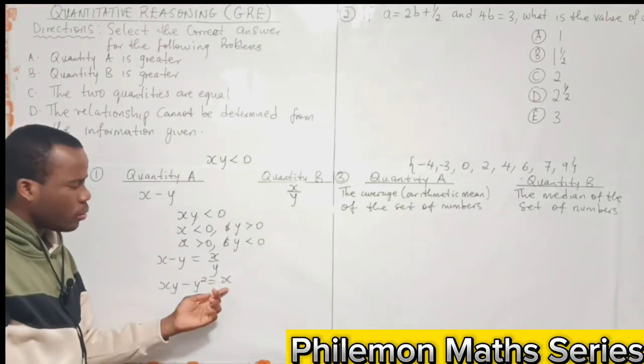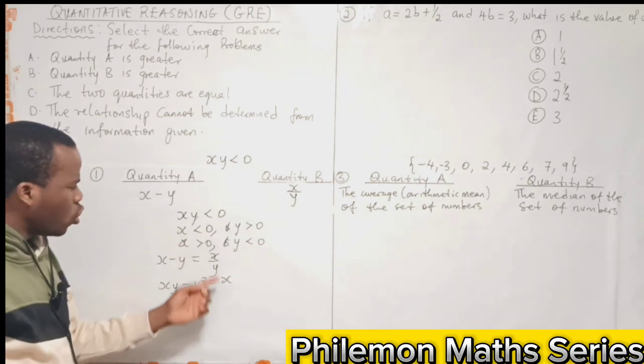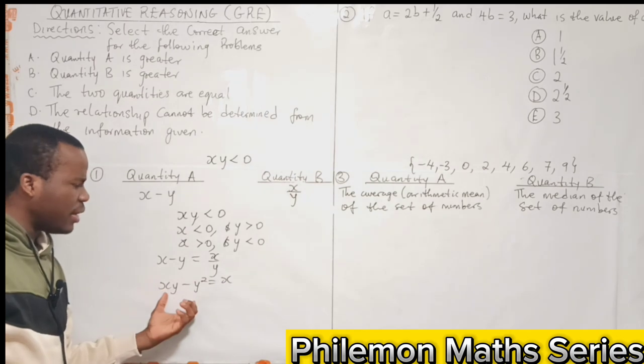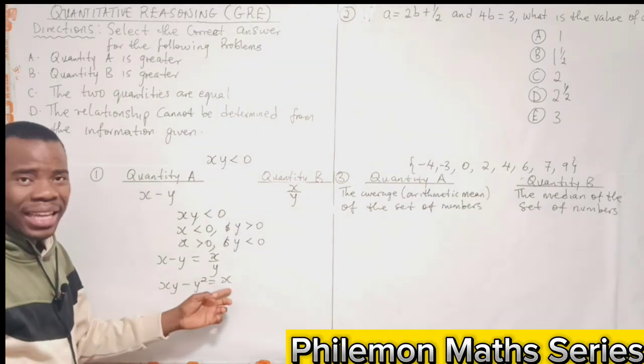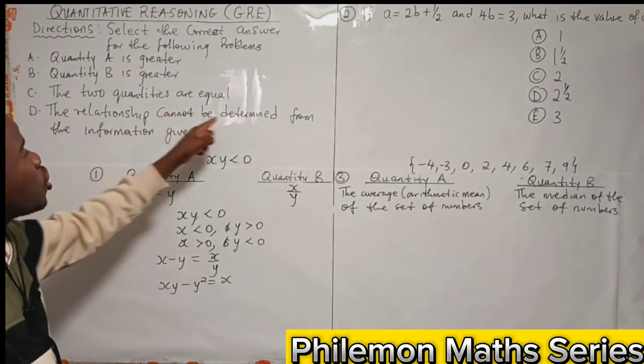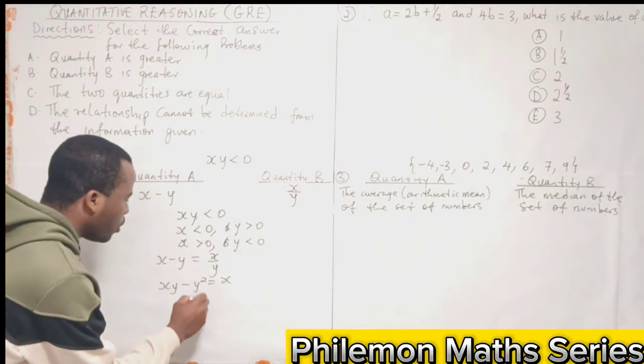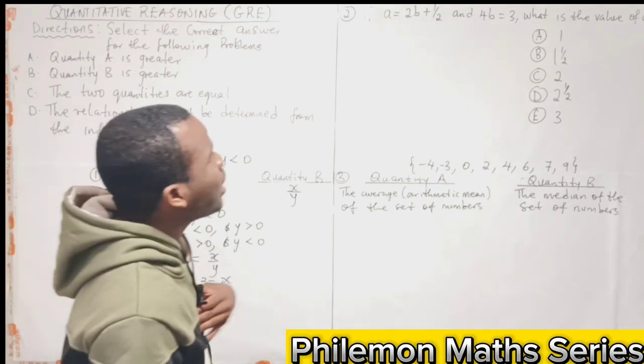What about our right hand side? Our right hand side can either be positive or negative. So it means since our left hand side is negative and our right hand side can either be positive or negative, it therefore means the relationship cannot be determined from the information given. So the correct option here is D.